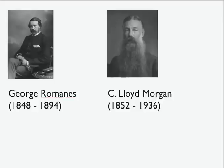The pictures here are of two late 19th century investigators who took very seriously the ideas of Charles Darwin. Our first character is George Romanes. He was a contemporary of Charles Darwin, knew him personally, and was very influenced by his work. Romanes wrote about animal intelligence and mental evolution in animals, seeking to put cognition and behavior of all species in the context of evolution.